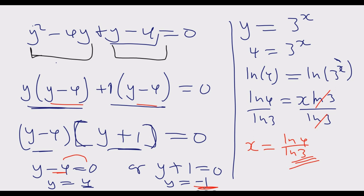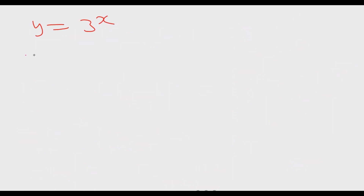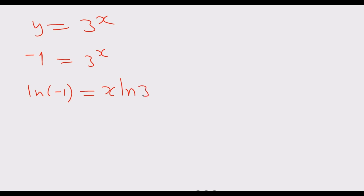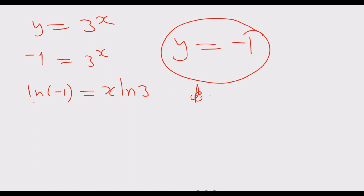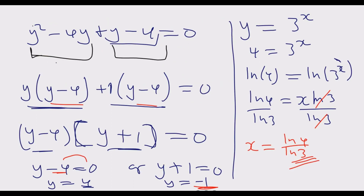Looking at the second solution, y equals 3 to the power x tells us negative 1 equals 3 to the power x. This has no solution, because even if we introduce a natural log, the natural log of a negative number is undefined. The natural log or log only takes a positive number. So the value y equals negative 1 cannot work and is not an exact solution. Hence we end up with x equals ln(4) divided by ln(3).